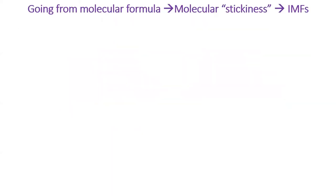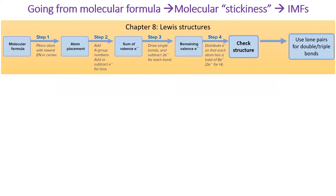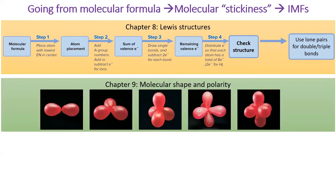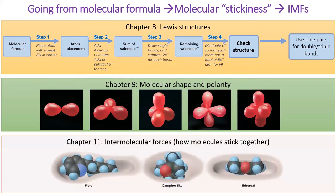A general roadmap for this part of the course is as follows. In Chapter 8, we learned how to write a valid Lewis structure for simple molecules. In this chapter, we'll be able to use those Lewis structures to identify the shape and polarity of a molecule. In Chapter 11, we will see how the shape and polarity determine intermolecular forces, which affect many properties of the molecule, such as whether it's a solid, liquid, or gas.